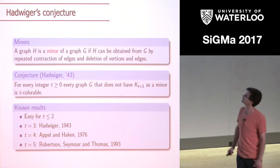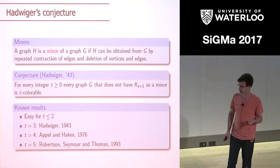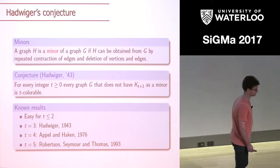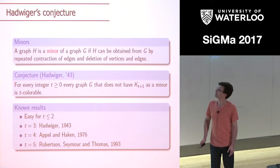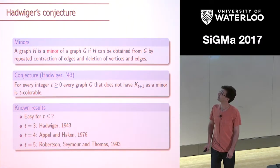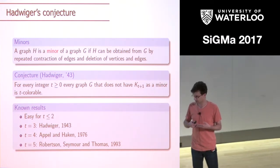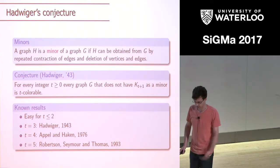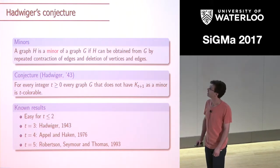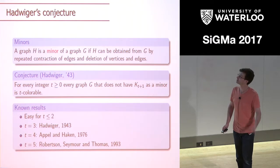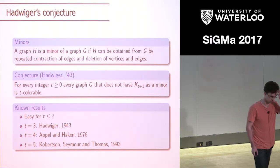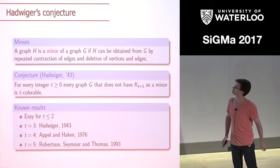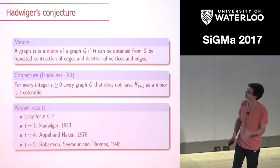Let me overview the known results on Hadwiger's conjecture. It's easy to check for t at most two. For t=3 it was proven in the same paper where Hadwiger states the conjecture. For t=4, it is equivalent to the four color theorem — one of the reasons this conjecture is very interesting, being a very ambitious extension of it. For t=4 it was proven when the four color theorem was proven by Appel and Haken, and it's also known for t=5 by Robertson, Seymour, and Thomas in an almost 100-page paper which, unlike the four color theorem proof, was computer-free but used the four color theorem.